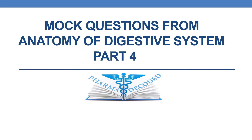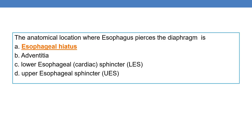Hello everyone, let us discuss more questions from Anatomy of Digestive System Part 4. Coming to the first question: the anatomical location where the esophagus pierces the diaphragm. The esophagus cuts through the diaphragm, and that anatomical location is called the esophageal hiatus.